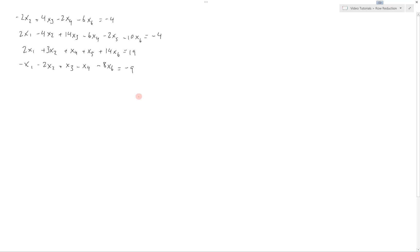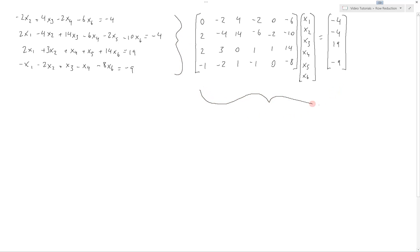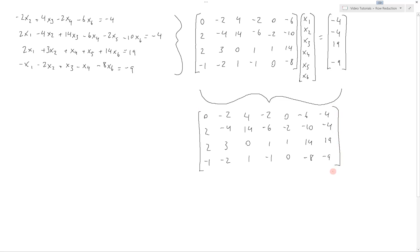Suppose we start out with a system of equations with six unknowns and four equations. We can write this in standard matrix equation form by creating the coefficient matrix, and from that we can form the augmented matrix of the system by concatenating the coefficient matrix with the solution vector. This is the matrix that we're actually going to be working with. We're going to use row operations to create the echelon form and the reduced echelon form.